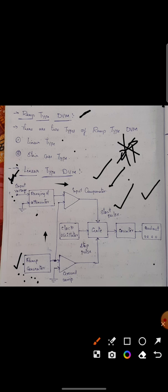The gate will get open and the clock oscillator will produce pulses. The pulses produced by clock oscillator will be counted by the counter and it will be read out on the display.